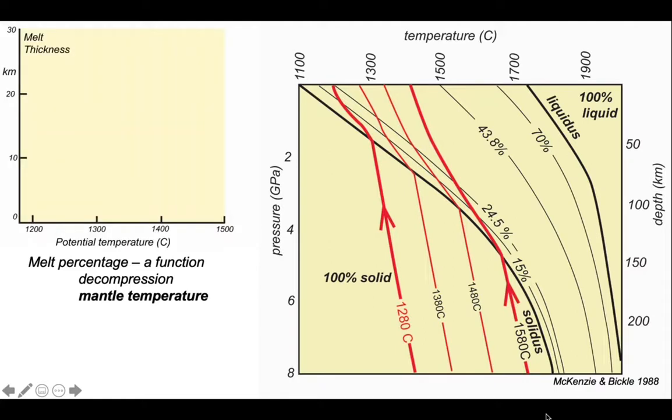We can explore this further. This graph shows melt thickness, in other words crustal thickness, that will be generated by this process versus potential temperature. The relationships plot like this. We can plot on our 1280 material here, and this generates normal oceanic crust with a thickness of six or seven kilometers.